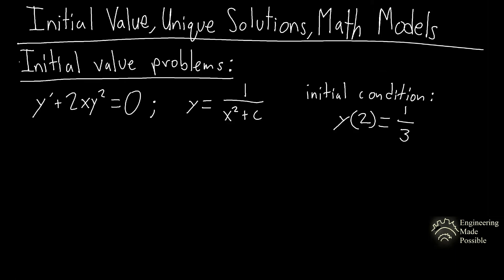We'll start with initial value problems. For the first problem we have the differential equation y' + 2xy² = 0. The one-parameter family of solutions given is y = 1 / (x² + c), where c is an arbitrary constant.